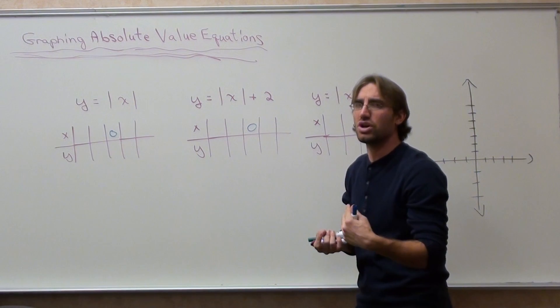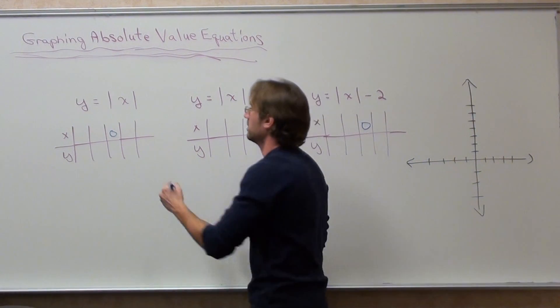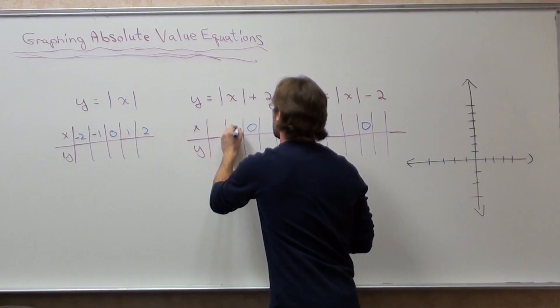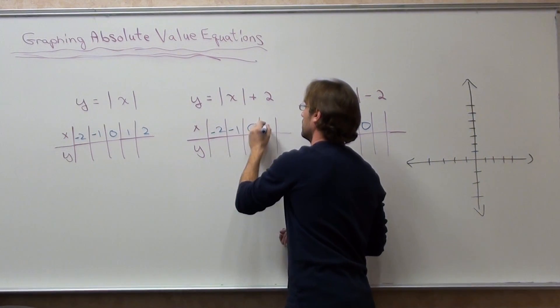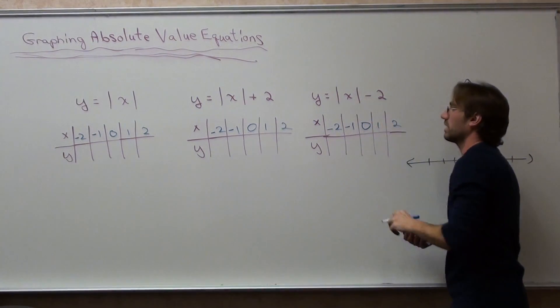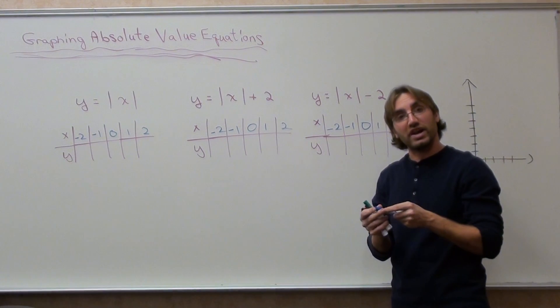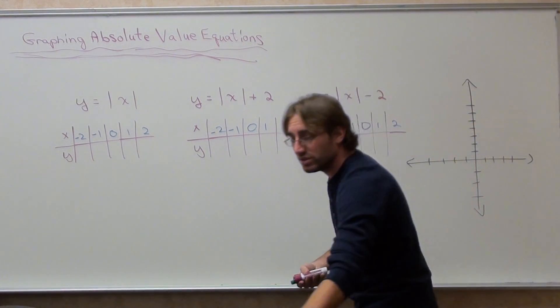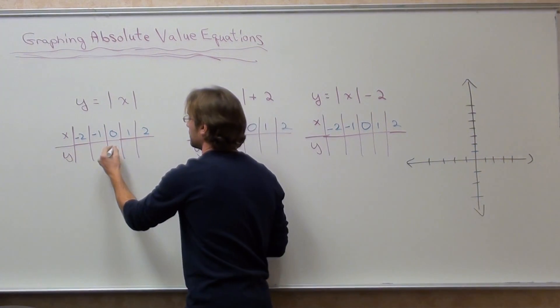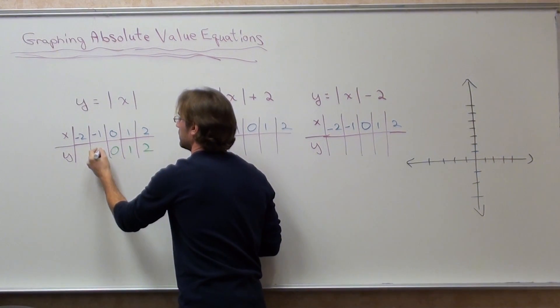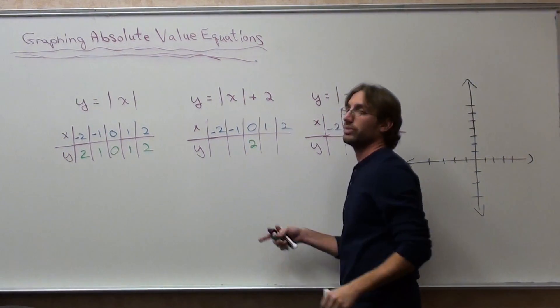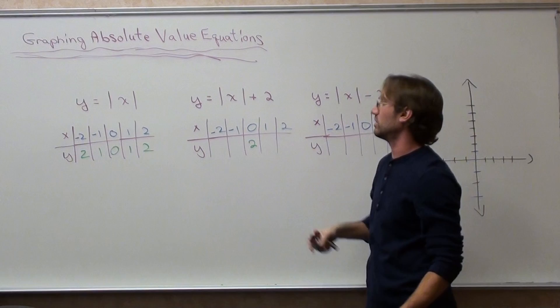But what I'm trying to show you is that you can figure these out without doing that. And I'm going to substitute in the values very quickly to figure out what they're equivalent to. It's 2. Absolute value of 0 is 0, but then you're adding 2 afterwards.